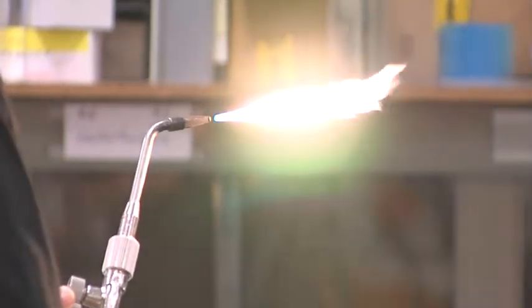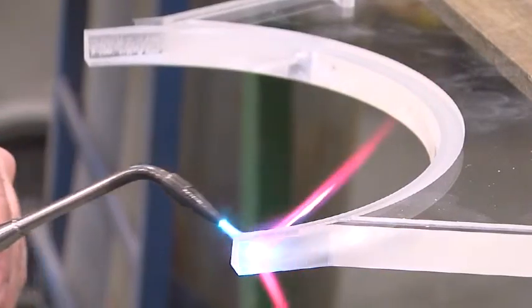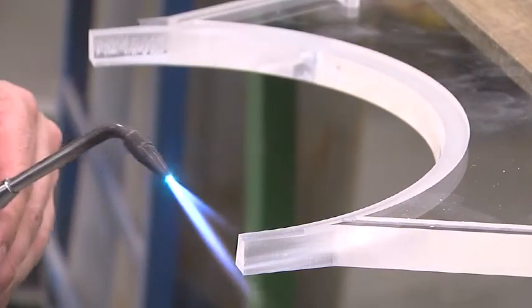The most commonly used method is flame polishing, using a blowtorch to carefully heat up the cut edges to the point where they start to melt.